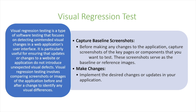In today's video, we're going to talk about visual regression testing. Visual regression testing is a type of software testing that focuses on detecting unintended visual changes in a web application's user interface. It is particularly useful for ensuring that updates or changes to a website or application do not introduce unexpected visual defects. Visual regression testing involves comparing screenshots or images of the application before and after a change to identify any visual differences.